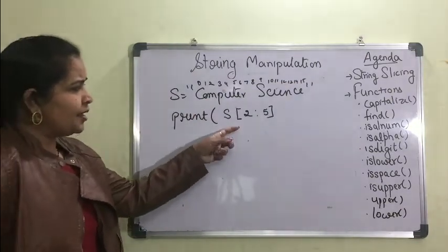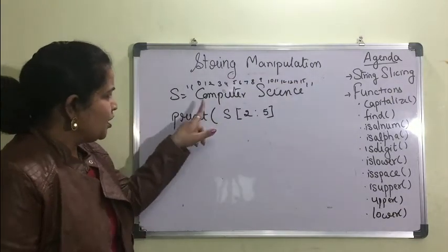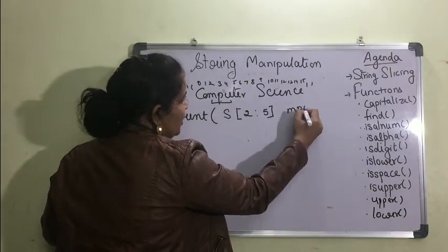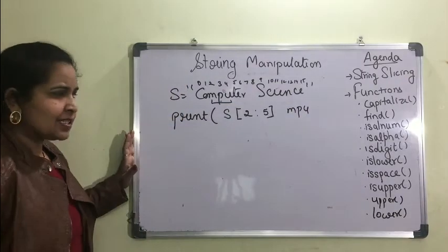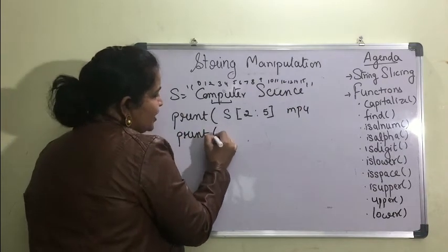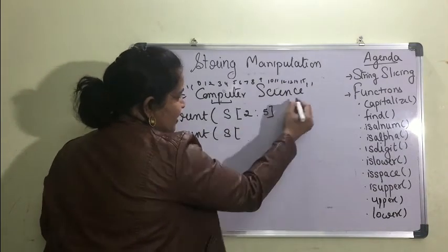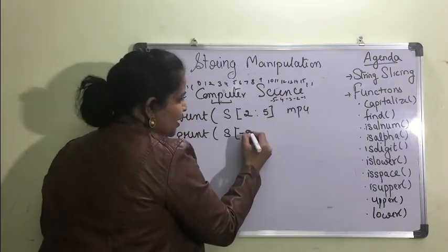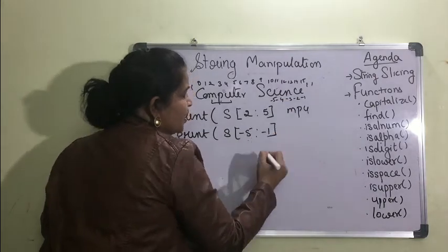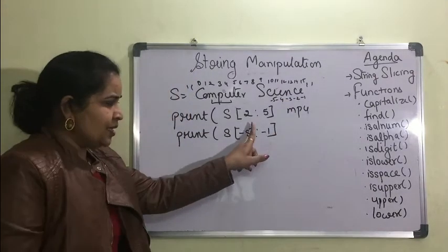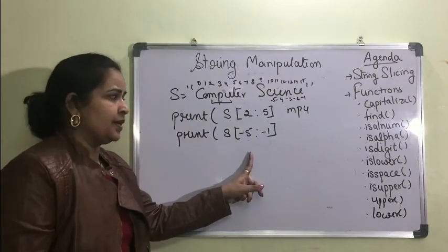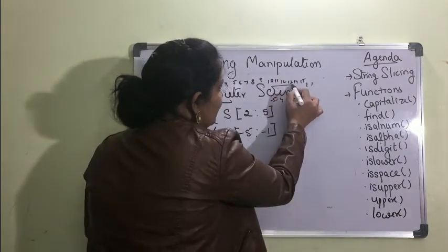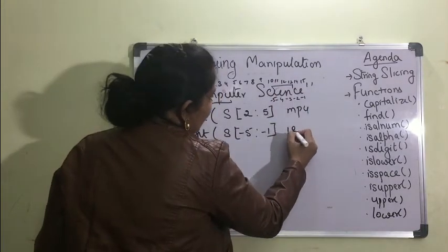For example, s[2:5] means indices 2, 3, 4 — the upper limit 5 is exclusive. We can also use negative indexing: -1, -2, -3, -4, -5. If I write s[-5:-1], the upper limit is exclusive, so it will print the characters from that range. Use a colon — not a comma — between the indices; the colon is mandatory.